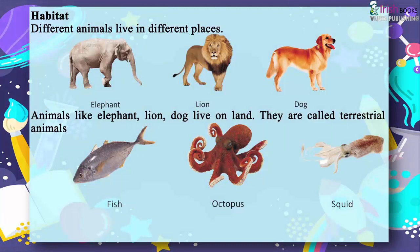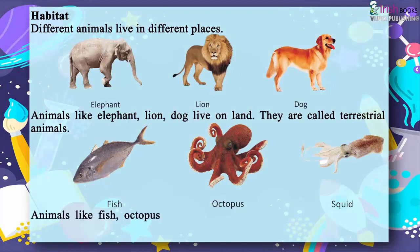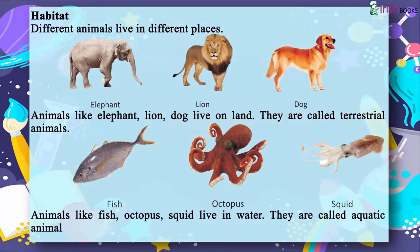They are called terrestrial animals. Animals like fish, octopus, and squid live in water. They are called aquatic animals.